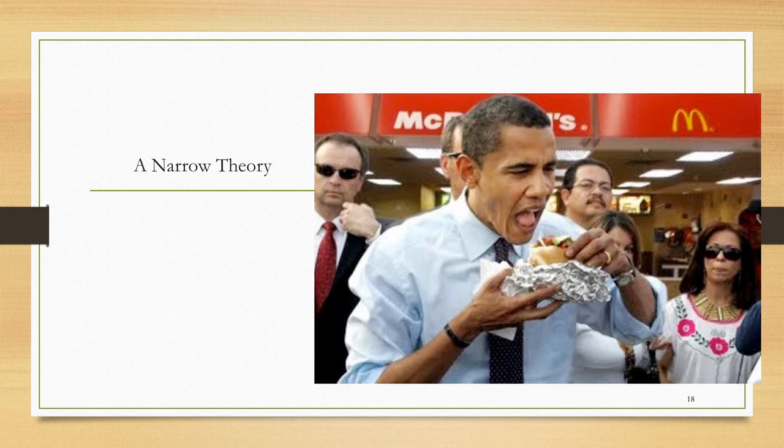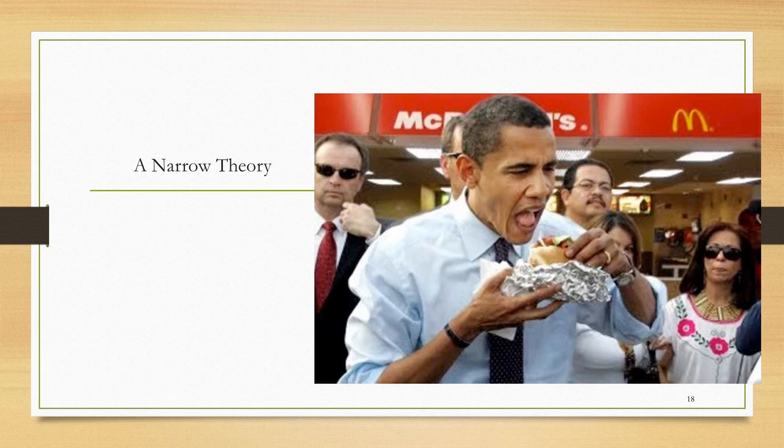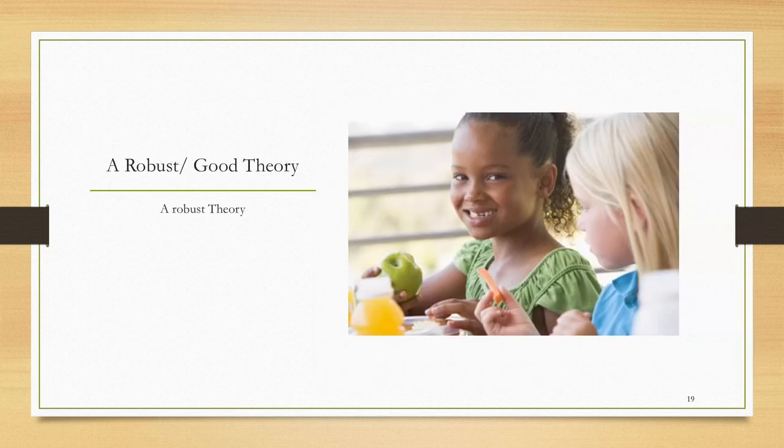A narrow theory is one where it's limited in terms of its explanation. For example, if we want to come up with a theory for how people eat, but I can only explain why Obama is eating at McDonald's, that's not a very good theory. I need to explain why people eat and the choices they make. A robust theory is something that can explain why kids eat what they eat, why adults eat what they eat, why people eat what they eat in the United States, why people might eat what they eat in China, and so forth. If it can explain a variety of different phenomena, then it's a good theory.